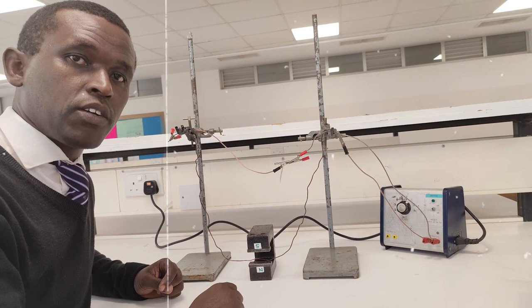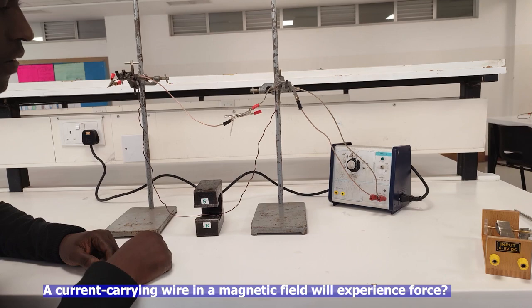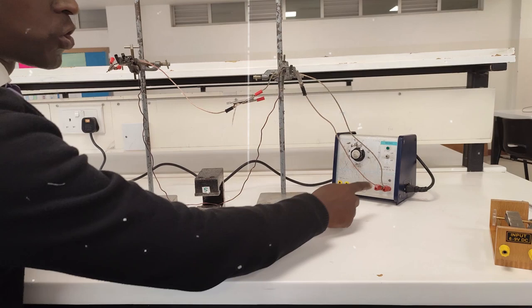With me here I have a power pack, I have two stands. On my power pack I've connected some wire and I have a magnetic field here, a permanent magnet. Now what I'm going to see is that when I switch on my current, this wire is going to deflect in a certain direction.